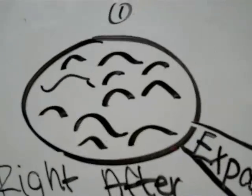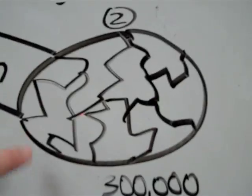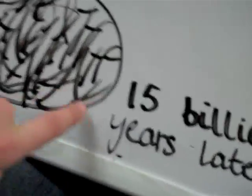This is a drawing on how it happened. This is what it looked like right after the Big Bang, and then it expanded. This is what it looked like 300,000 years later. Then 15 billion years after that, this is what it looked like.